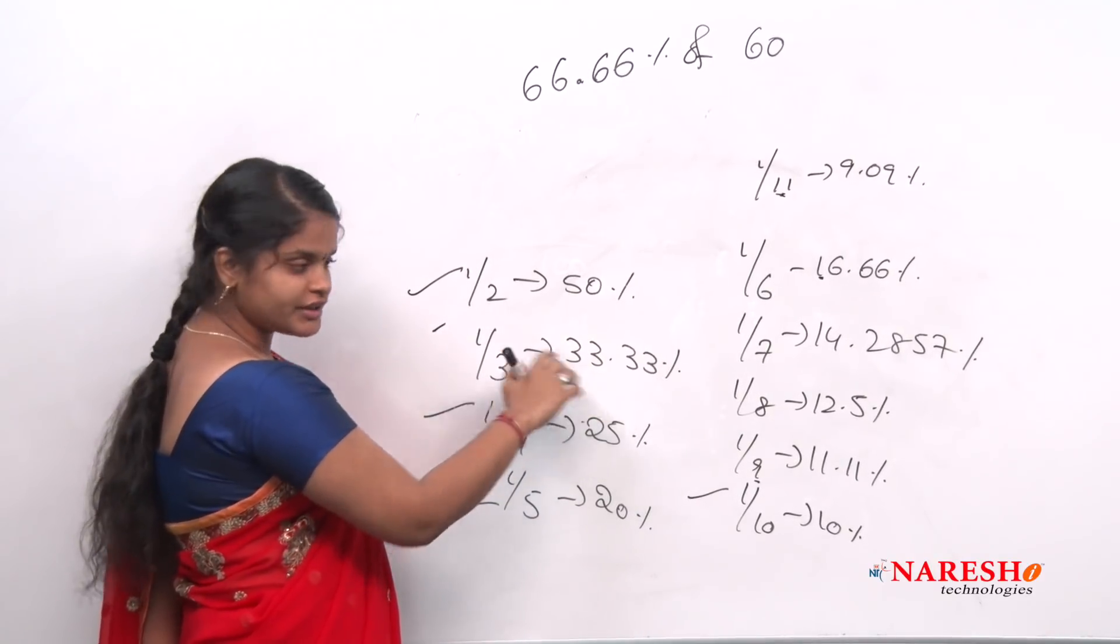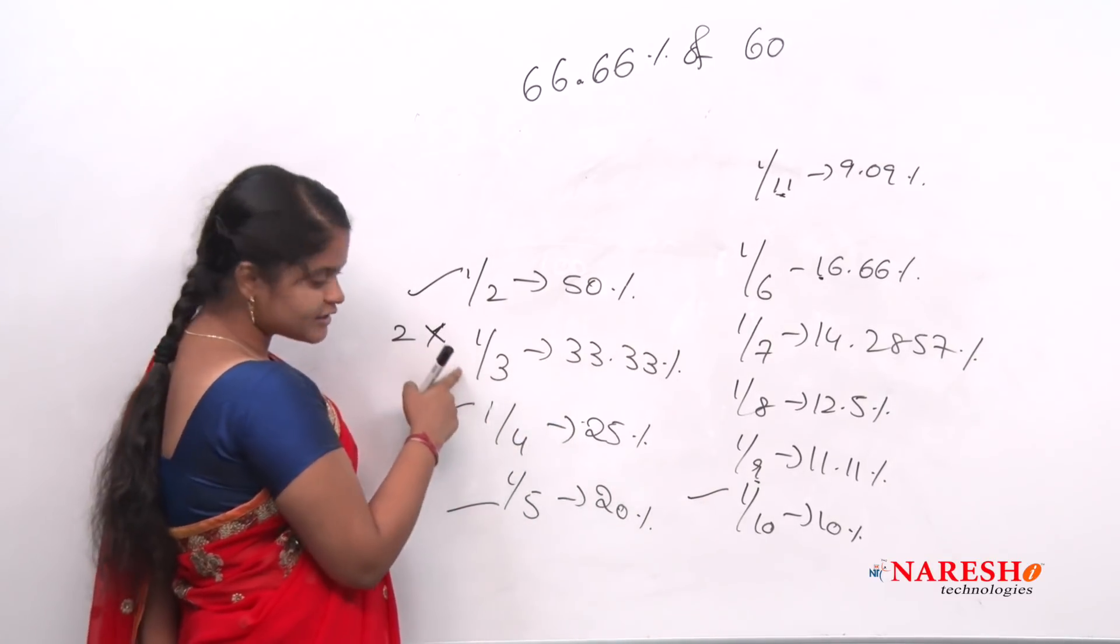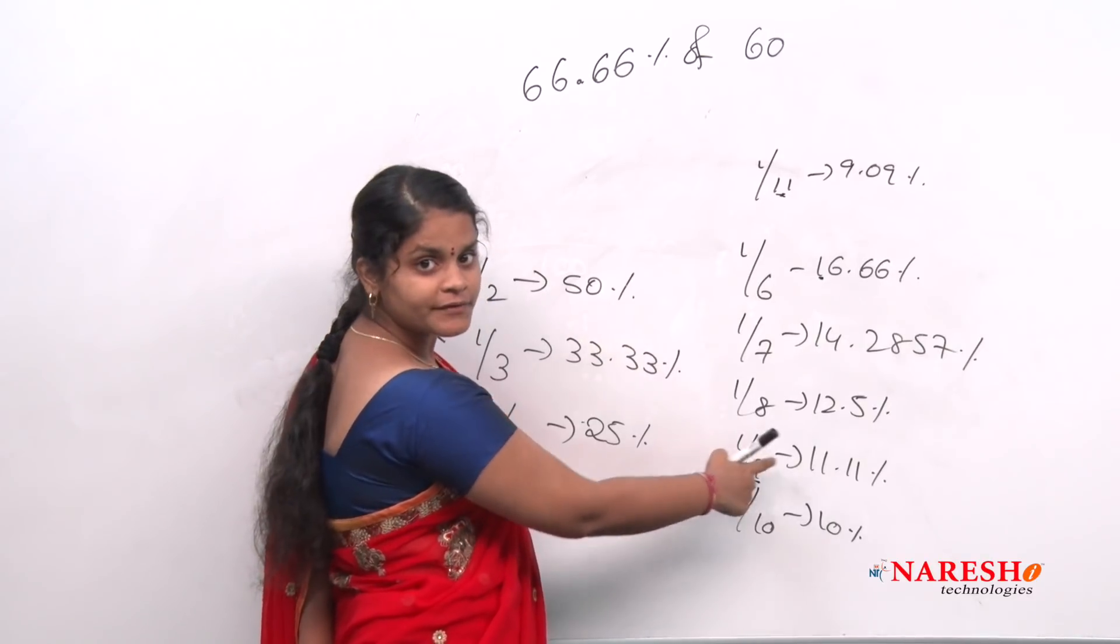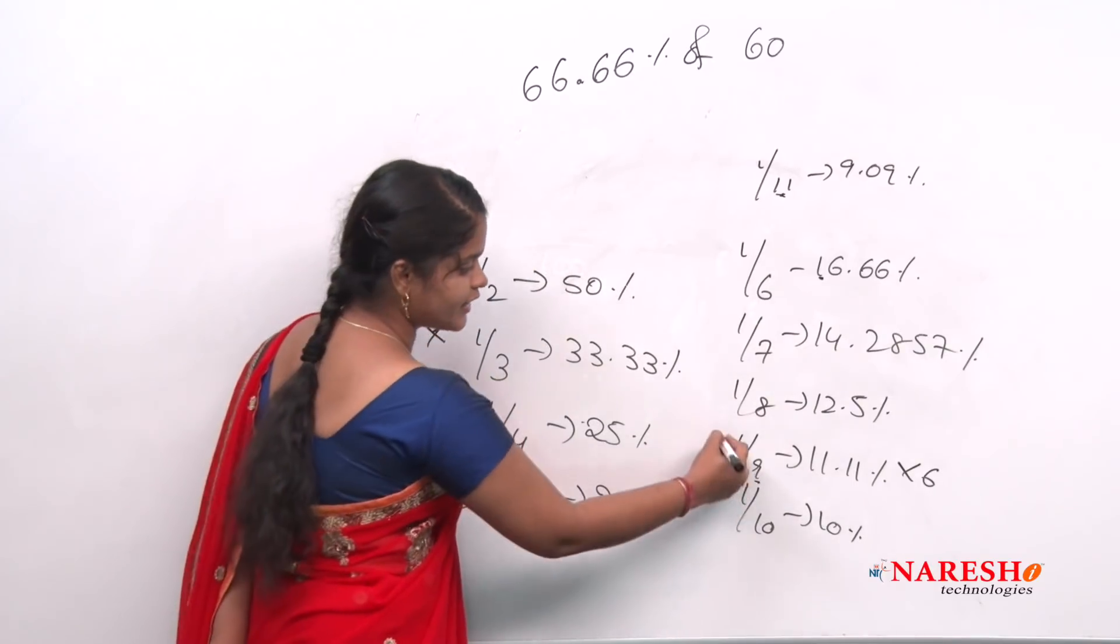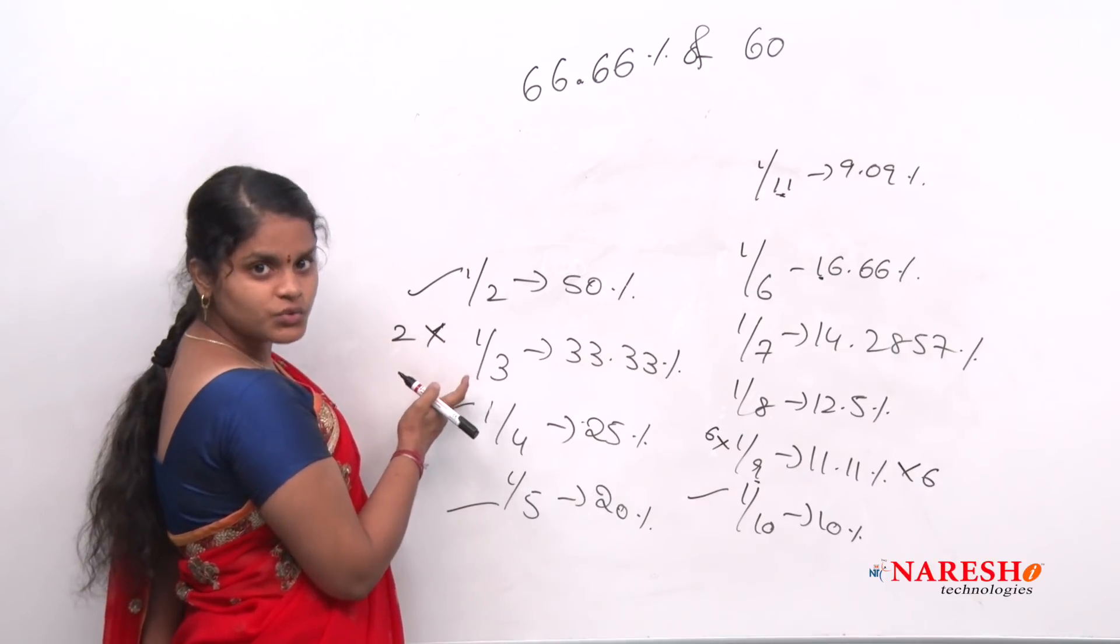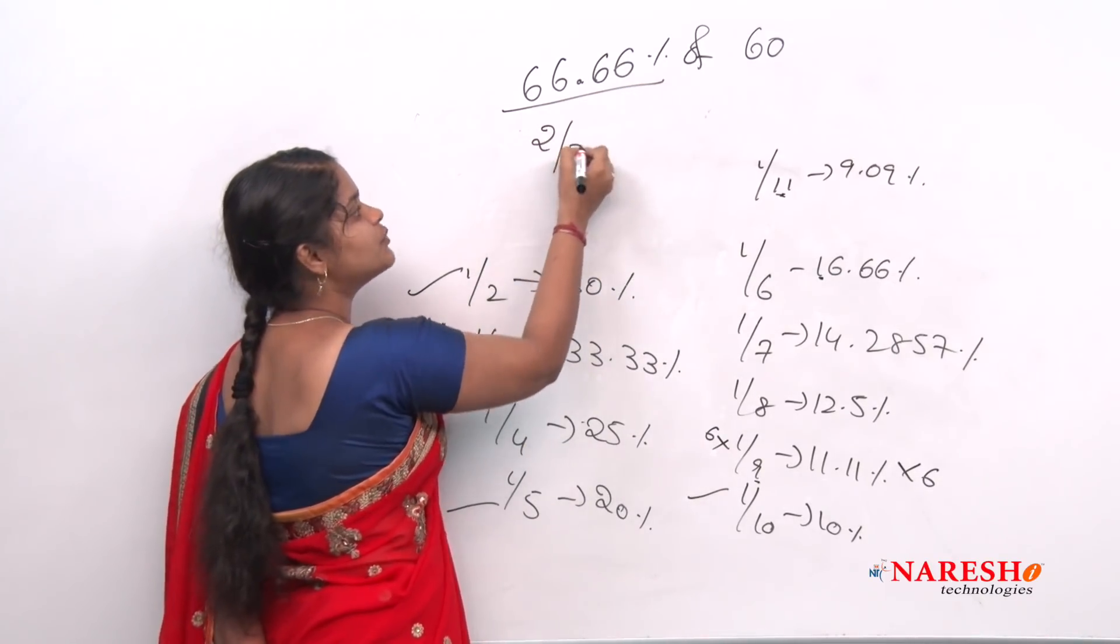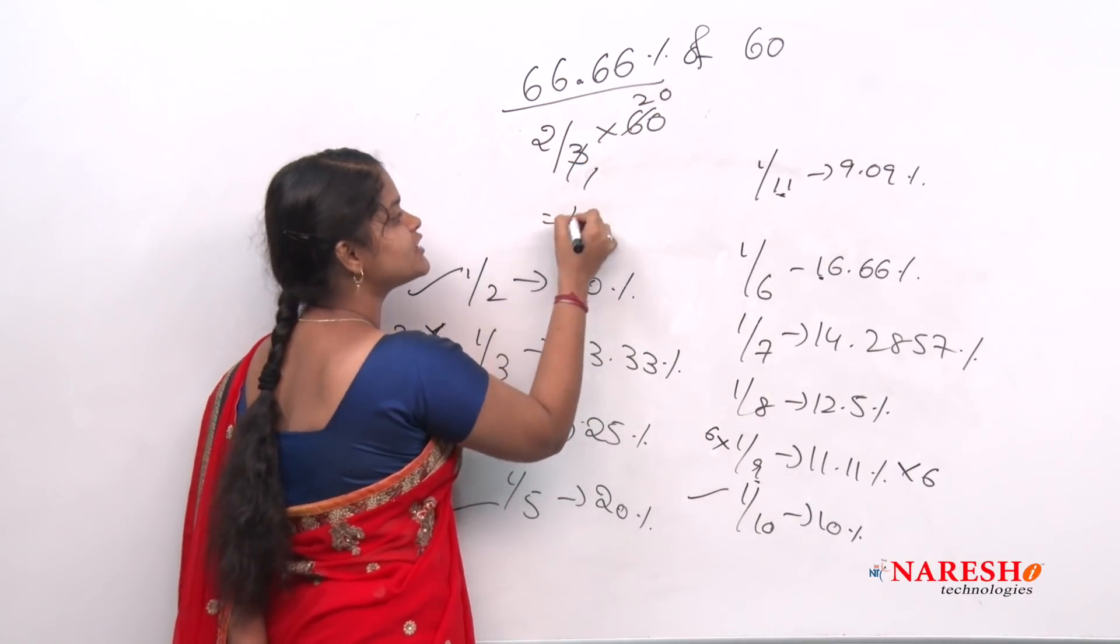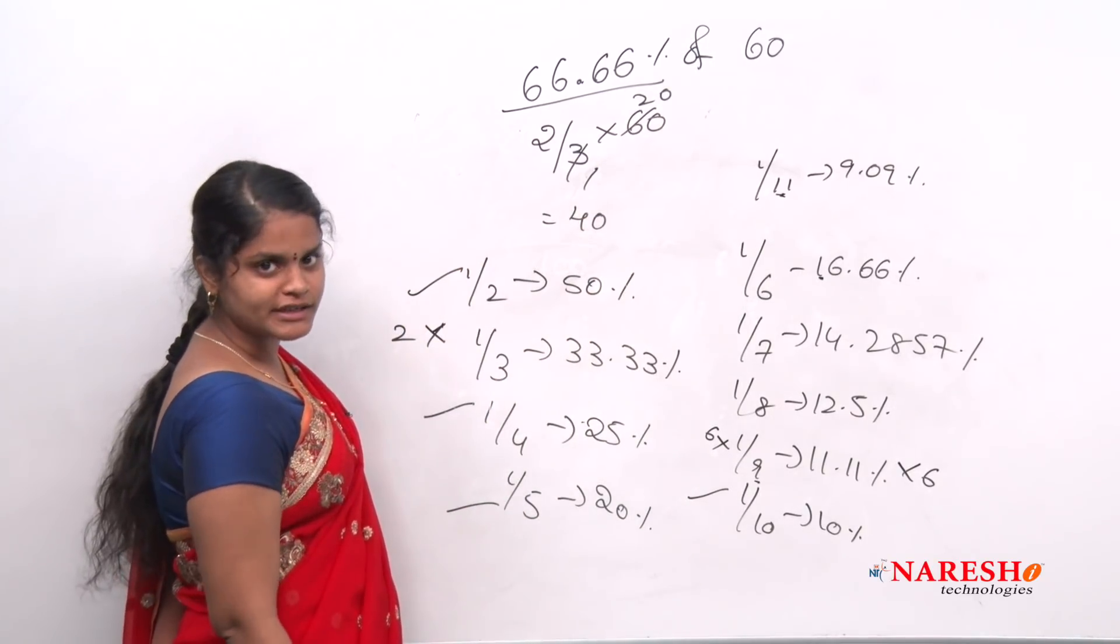If I do into 2 here, yes, into 2, I will get 66.66. It is nothing but 2/3. Or else I can go here. See, if I want to get 66.66, what I should do? Into 6, yes. So into 6 means 6/9 is nothing but 2/3. So the value is 2/3. So entire instead of this, I will write 2/3 into 60. So 2 into 20, how much it is? 40. This is how easily we can find percentage.